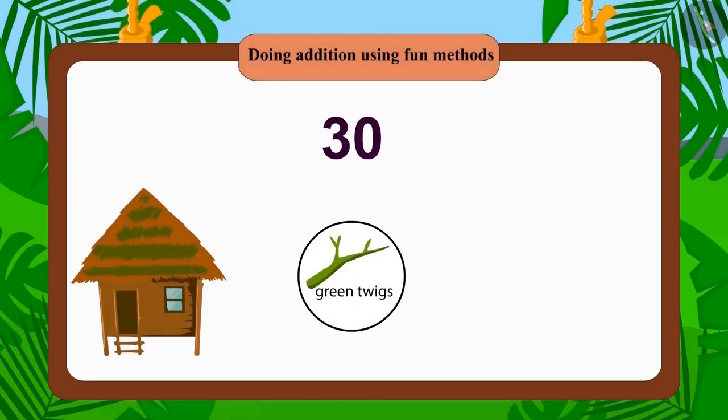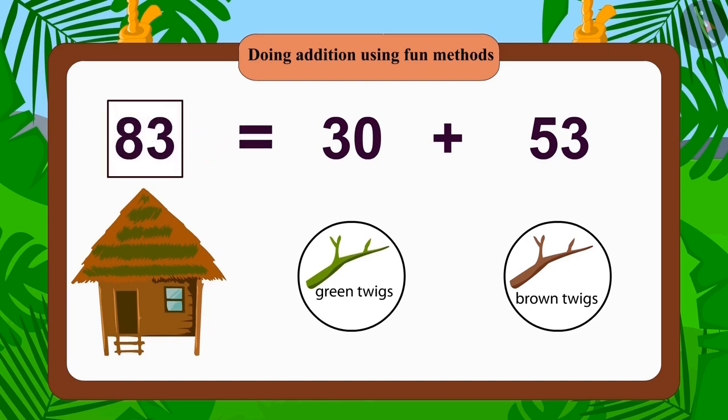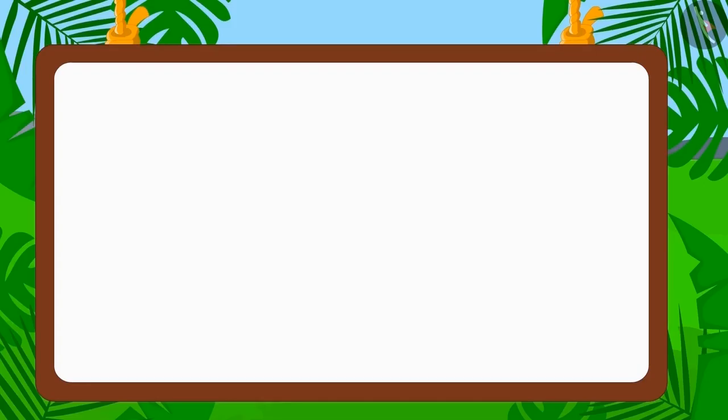So she rebuilt her house using 30 green twigs and 53 brown twigs. So how many thin twigs did Chanda use this time? Chanda again used only 83 thin twigs.